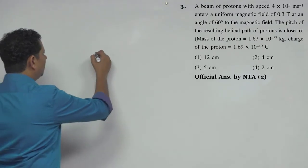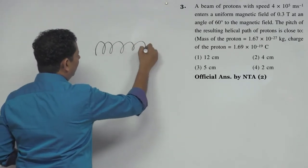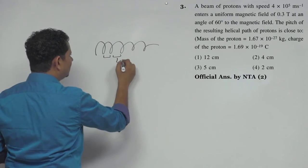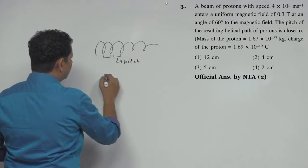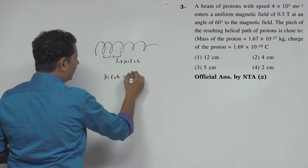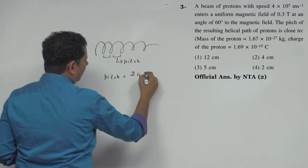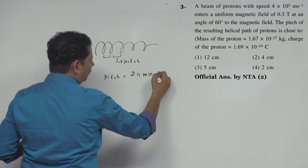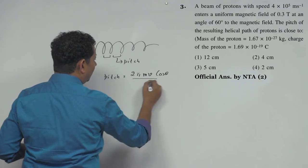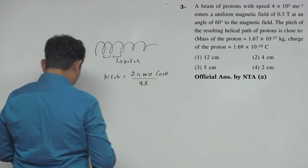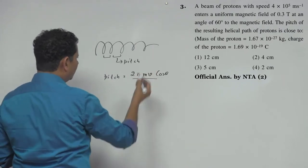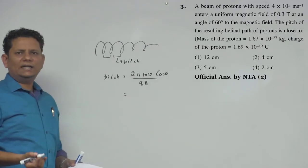So here, for the helical path, the pitch is given by the formula: pitch = (2πmv cosθ)/(qB). This is the formula you need to know. So this is the value we'll use to get the final answer.